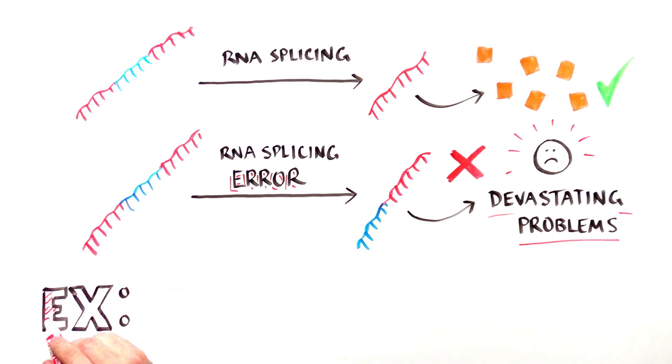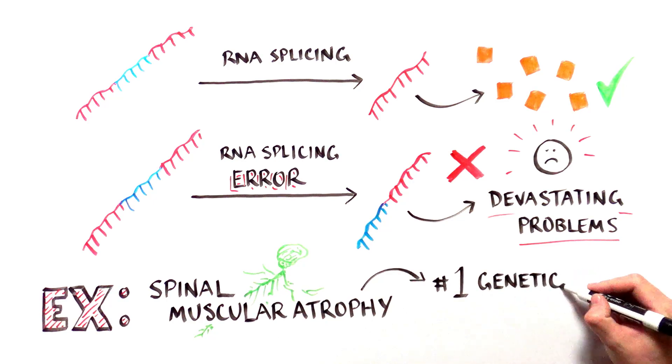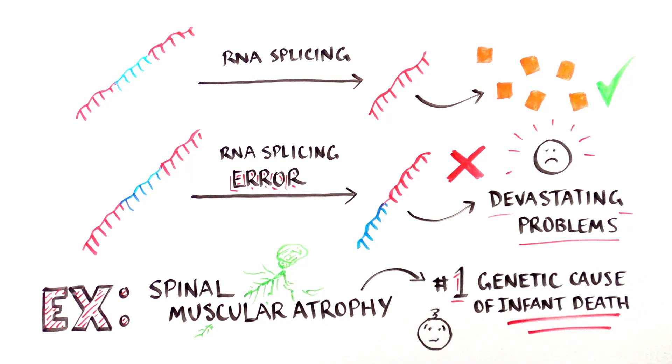One example is an often fatal disease called spinal muscular atrophy or SMA. It's the number one genetic cause of infant death.